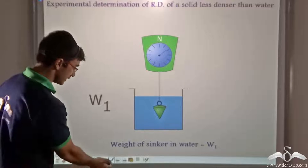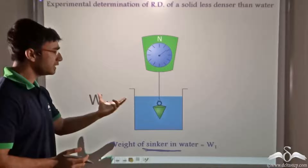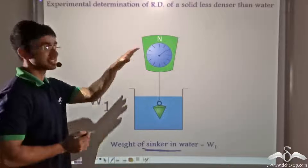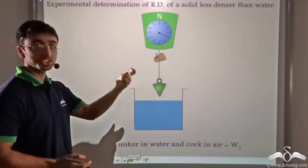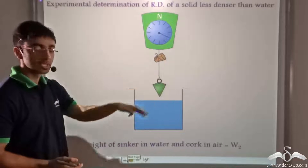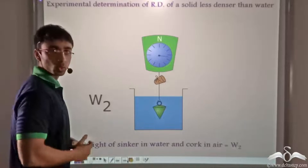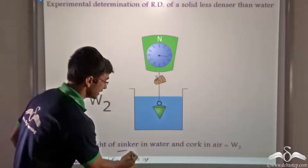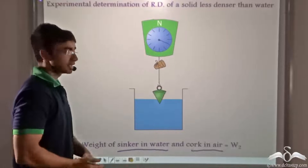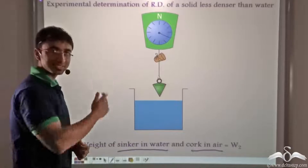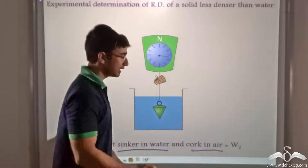First we consider a metallic sinker and not the solid whose relative density we need to find. In water, the weight of the metallic sinker is W1 as read from the scale. Next we dip the metallic sinker in water but tie the solid that is less dense than water — in this case a cork — at the top. Since cork is less dense than water it would remain floating, so this weight W2 is that of the sinker in water and the cork in air.